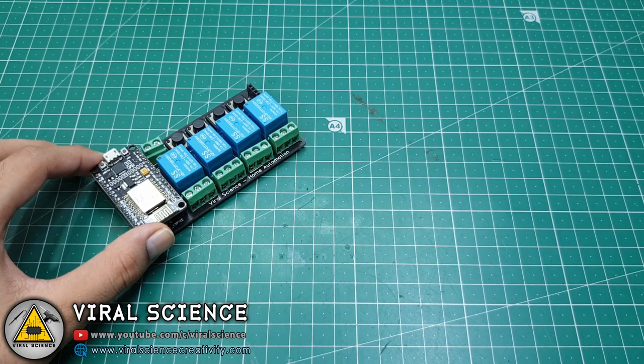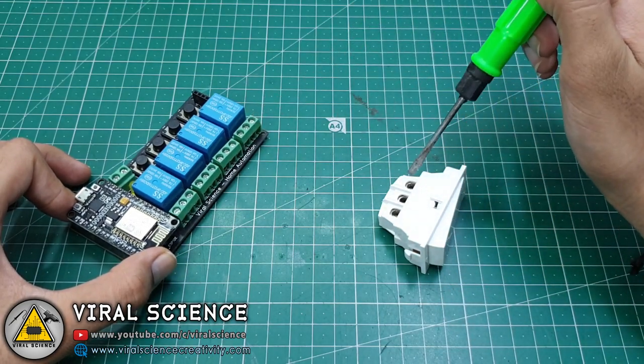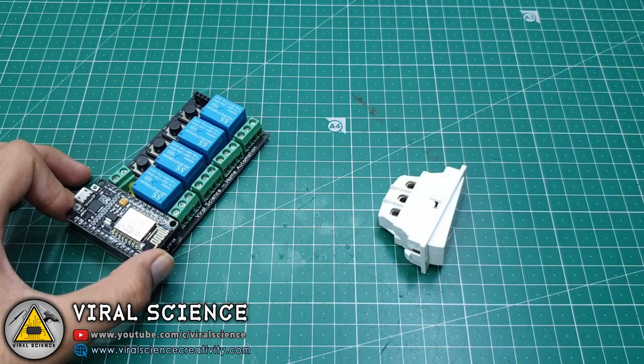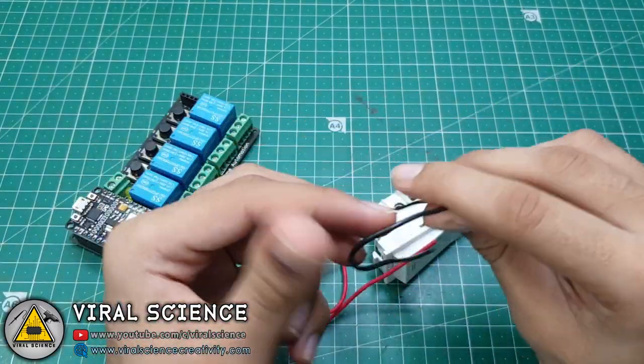Now we will connect this 2-way switch with our relay. As you can see, the relay has 3 pins and this 2-way switch also has 3 pins. The first pin from the relay will be connecting to the first pin of our 2-way switch, and the third pin from the relay will be connecting to the third pin of our switch. So we will connect it.